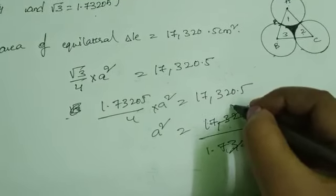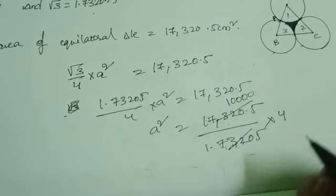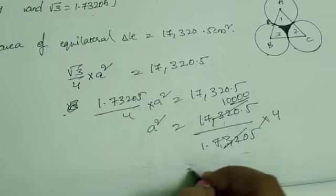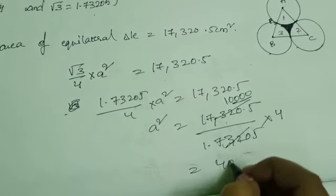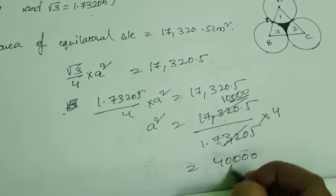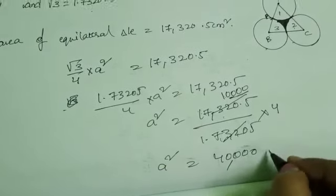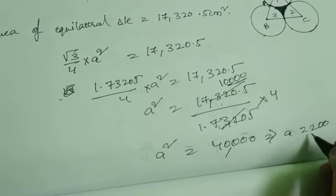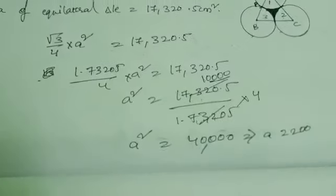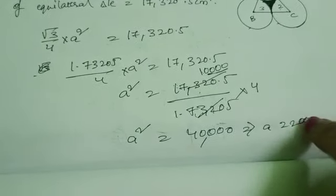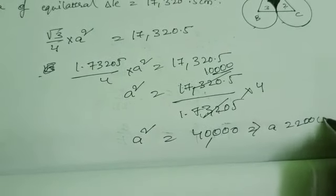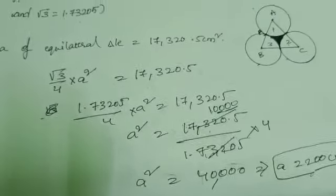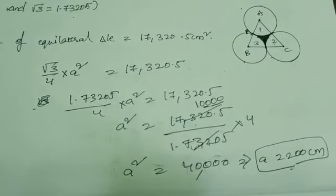This gives A² = 40,000. Therefore A = 200 cm (taking the positive value, since a side length cannot be negative). Each side of the triangle equals 200 cm.